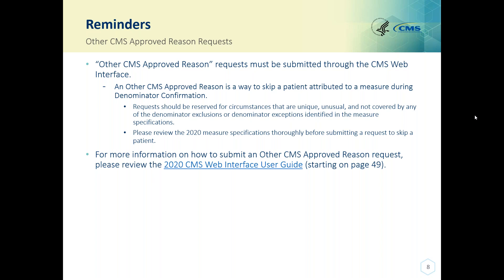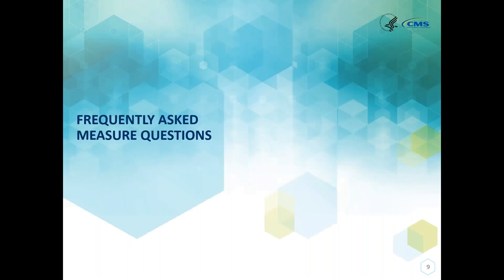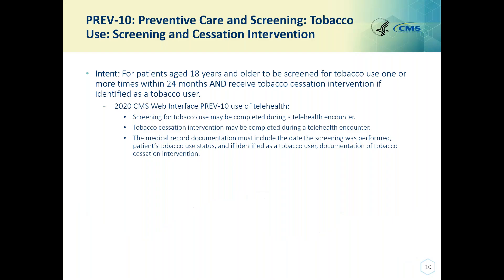My name is Katie Moore from the PIMMS team, and today I'm going to be going over some frequently asked measure questions. The first measure we're going to be discussing today is PREV-10. The intent of this measure is for patients aged 18 years and older to be screened for tobacco use one or more times within 24 months and receive tobacco cessation intervention if identified as a tobacco user. For 2020 PREV-10 and use of telehealth, screening for tobacco use may be completed during a telehealth encounter, as well as the tobacco cessation intervention. Your medical record documentation must include the date the screening was performed, the patient's tobacco use status, and if identified as a tobacco user, documentation of tobacco cessation intervention.